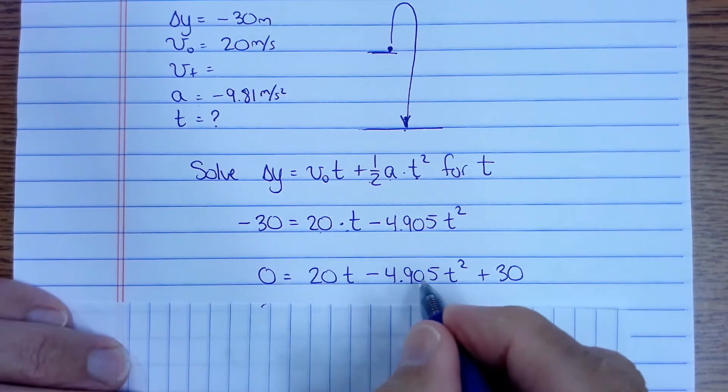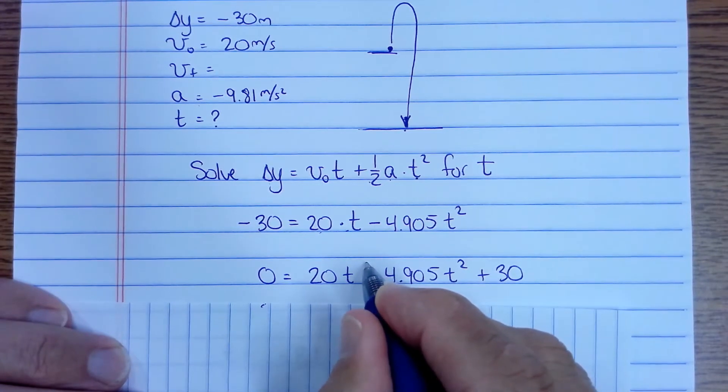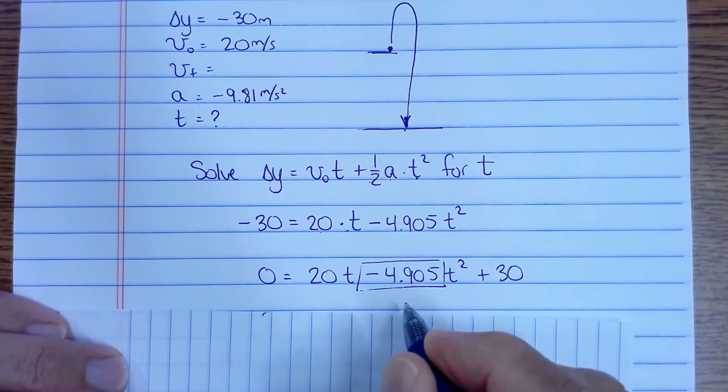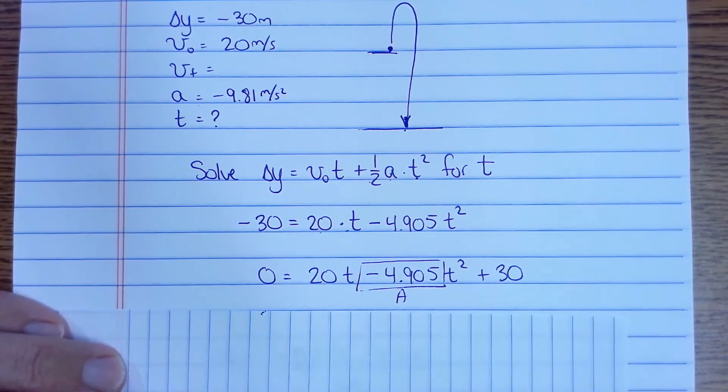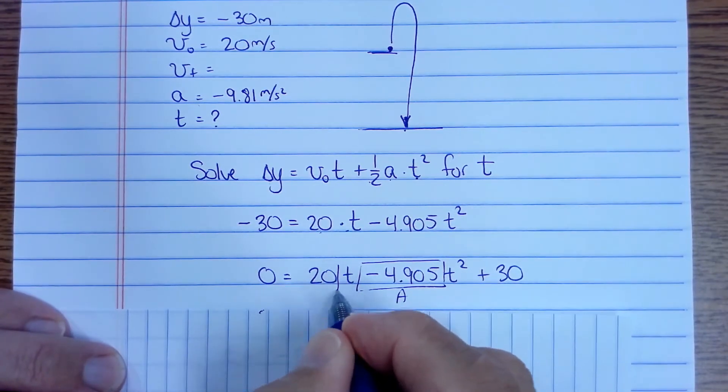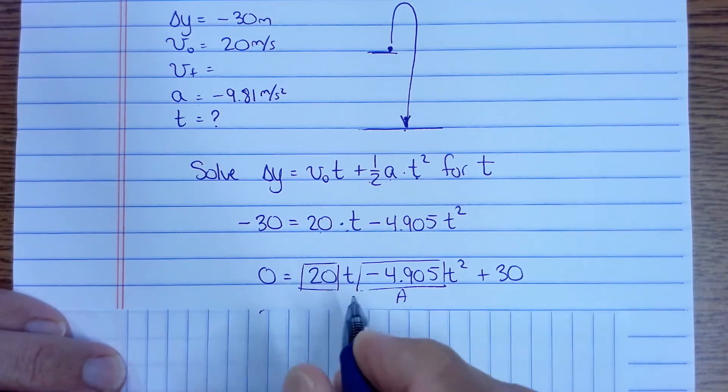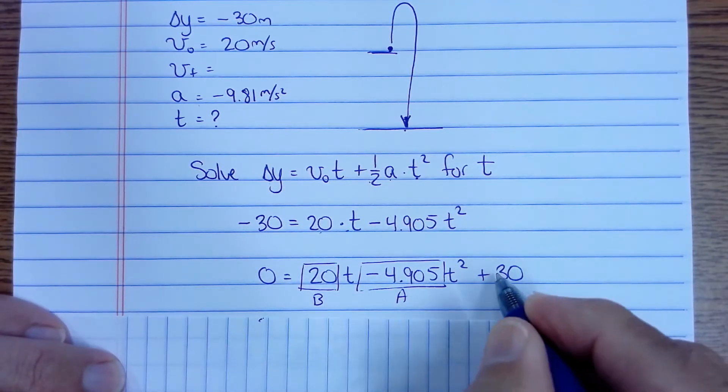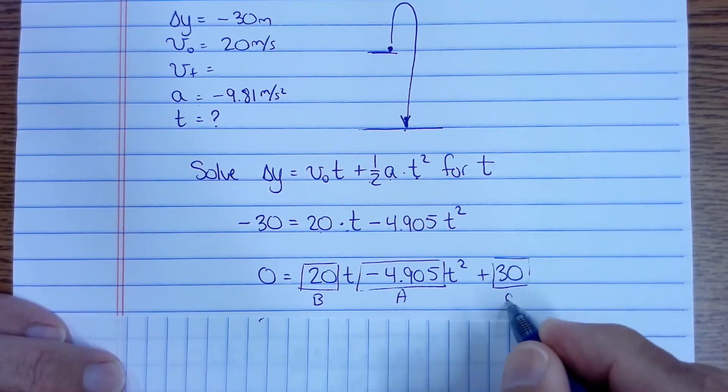And then whatever is in front of the squared term right here, this thing in front of the squared term, that's what we call a. Whatever is in front of the linear term, that's t to the first power, we call b. And whatever is constant we call c.